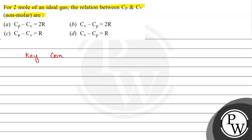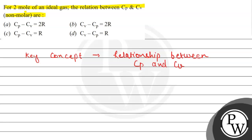Now let us see this question's key concept. The key concept of this question is the relationship between Cp and Cv. Cp is the heat capacity at constant pressure, and Cv is heat capacity at constant volume. The question mentions these are non-molar, which means Cp and Cv are the heat capacities, not the molar heat capacities.